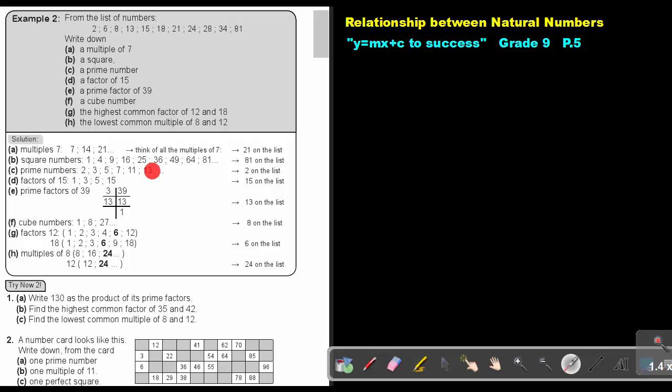Prime numbers. Write a few: 2, 3, 5, 7, 11, 13. Which one is on the list? 2.